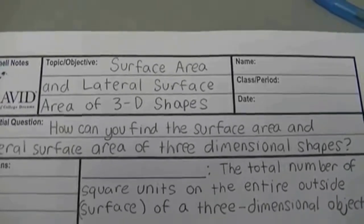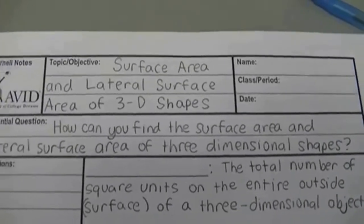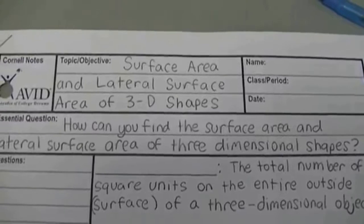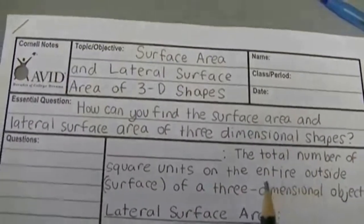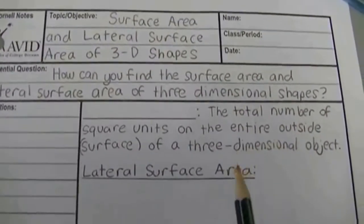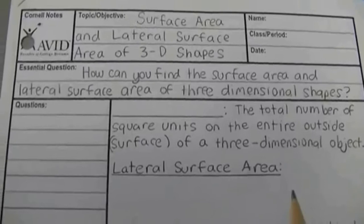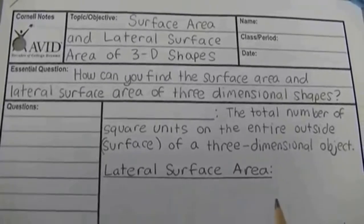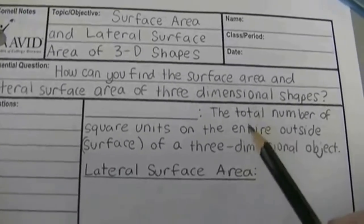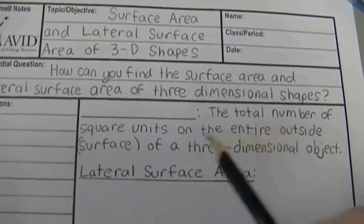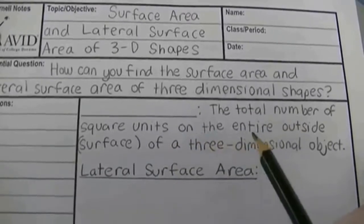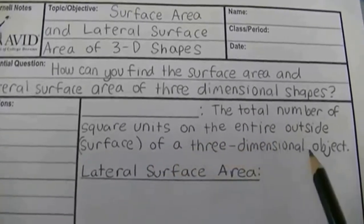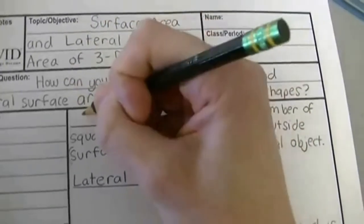Surface area and lateral surface area of 3D shapes is our topic and objective for today. Essential question: how can you find the surface area and lateral surface area of three-dimensional shapes? The total number of square units on the entire outside surface of a three-dimensional object is called its surface area.